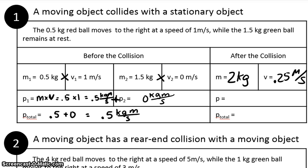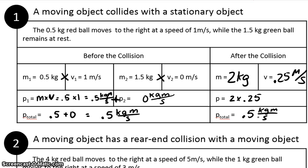After the collision, we just had one combined mass traveling at one velocity — 0.25 meters per second — so there's only one momentum to calculate. We have 2 times 0.25, and we get 0.5 kilogram meters per second.